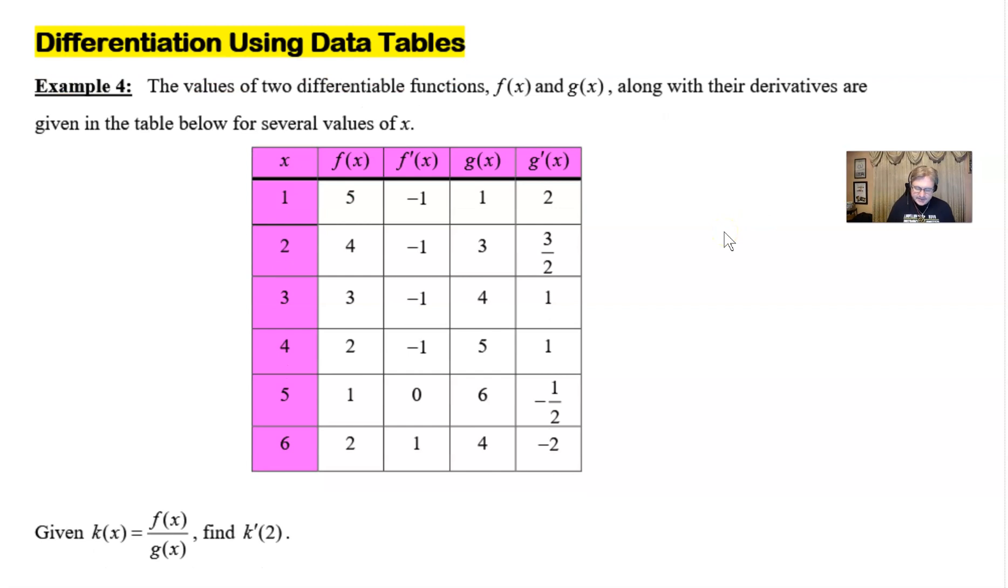that are placed in this table along with their derivatives. And so you can see from the table lots of numbers, lots of information. Obviously, we're not going to use all of these numbers, but we're probably going to use a few of them. And our function k(x) down below is defined to be f(x) over g(x).